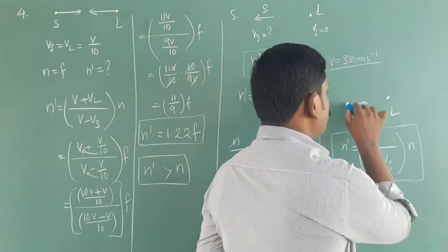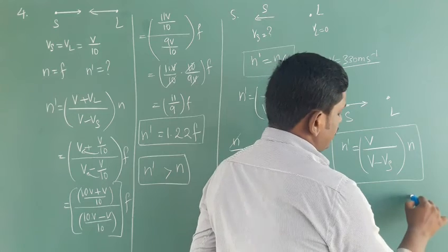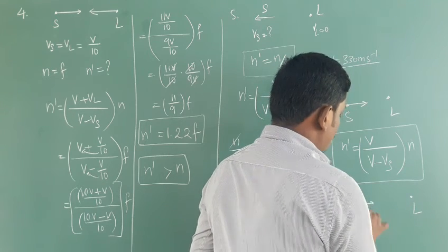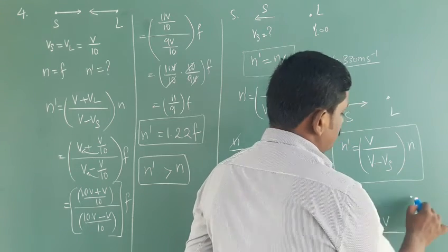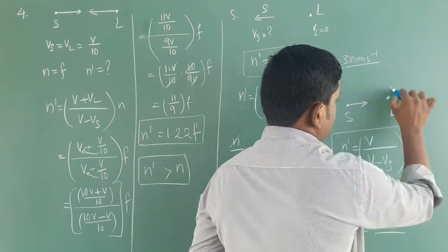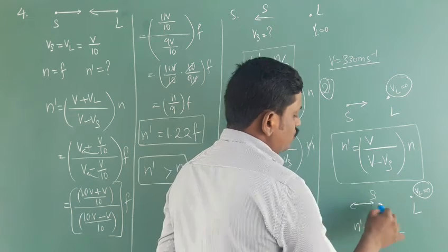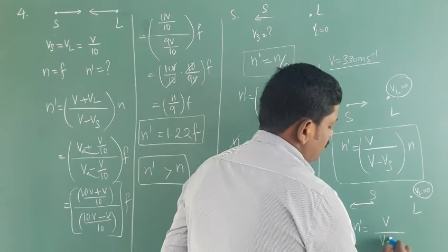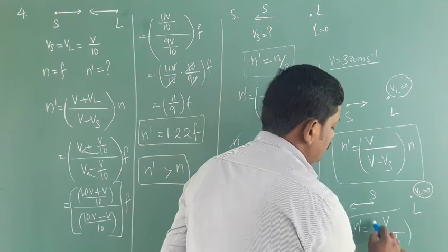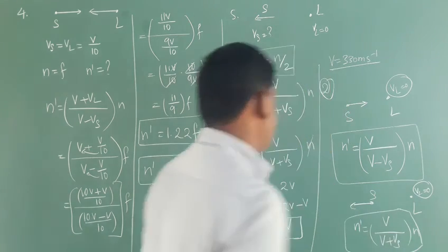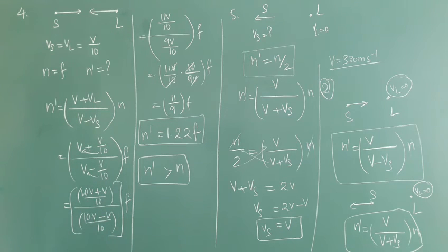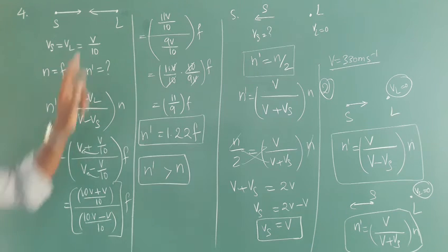When the listener is at rest and source moves towards, and similarly when listener is at rest and source moves away, VL equals 0 for both cases. For the general Doppler formula: both source and listener moving towards each other gives N dash equals V plus VL divided by V minus Vs, times N. Here N dash is the apparent frequency heard by the listener, and N is the frequency created by the source.